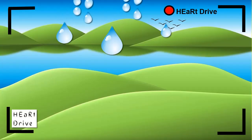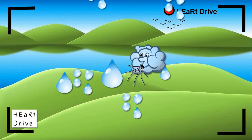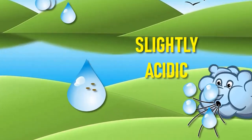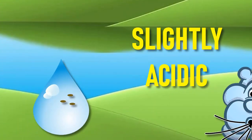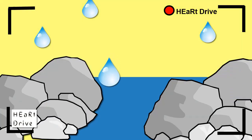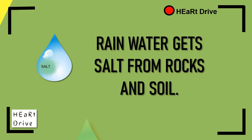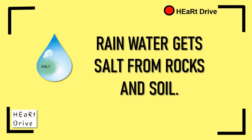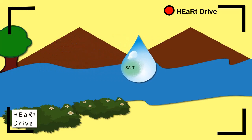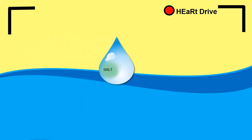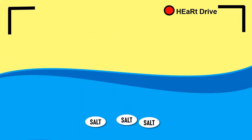When rainwater falls to the ground, the air in the atmosphere makes the rainwater slightly acidic. And when this slightly acidic water passes rock and soil, it erodes the rocks and stones and carries the salt from rocks and stones with it. Then, the salt-acquired rainwater crosses rivers and reaches the ocean finally.